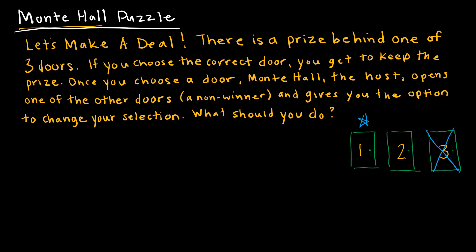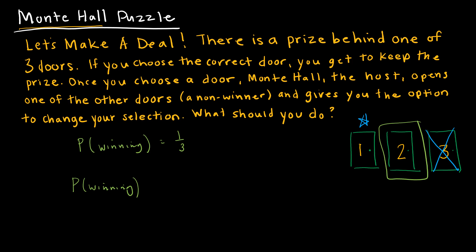You should choose to switch to door number two, and here's why. When I chose the first time, my probability of winning was just one out of three — there are three doors and one wins. But now if I switch, my probability of winning is actually two-thirds. If I win by switching, that means my initial pick was wrong, and the probability my initial pick was wrong is 1 − 1/3 = 2/3. So it's always a better deal to change based on probability theory — not saying door two is definitely the winner, but switching gives you an extra one-third probability.